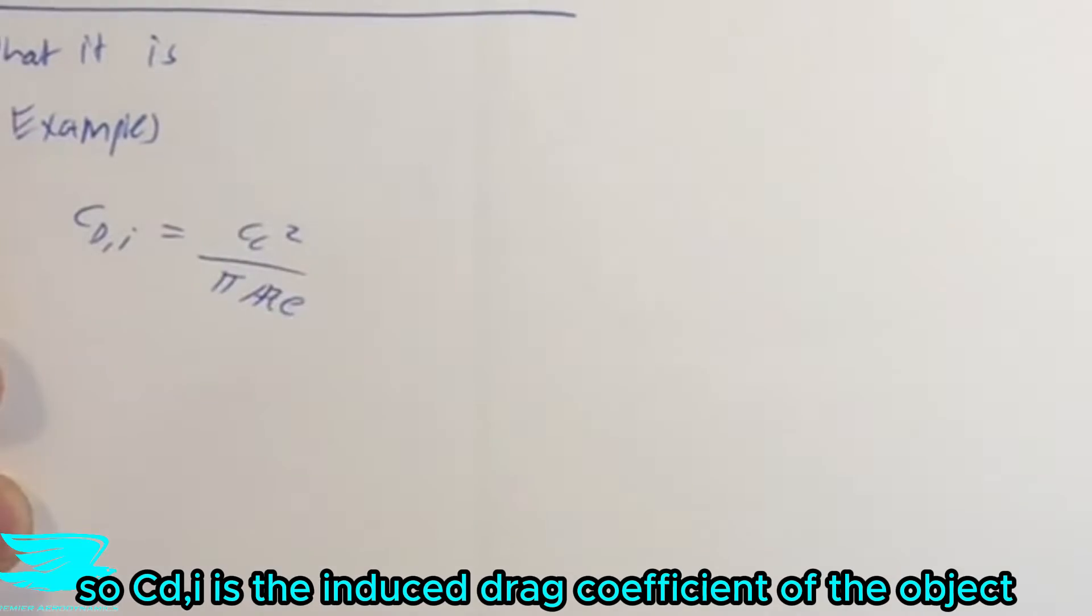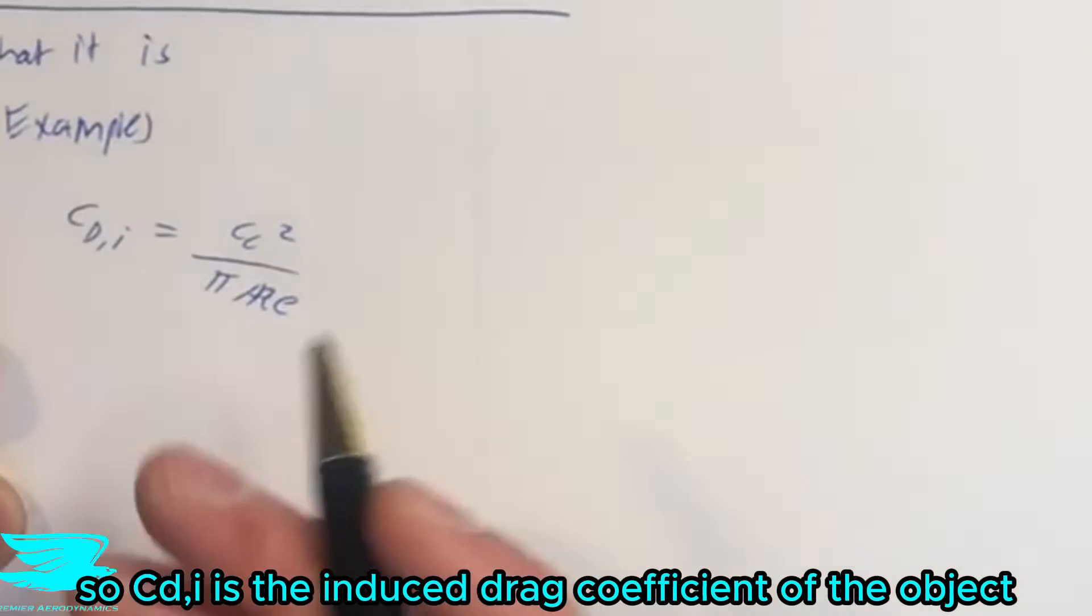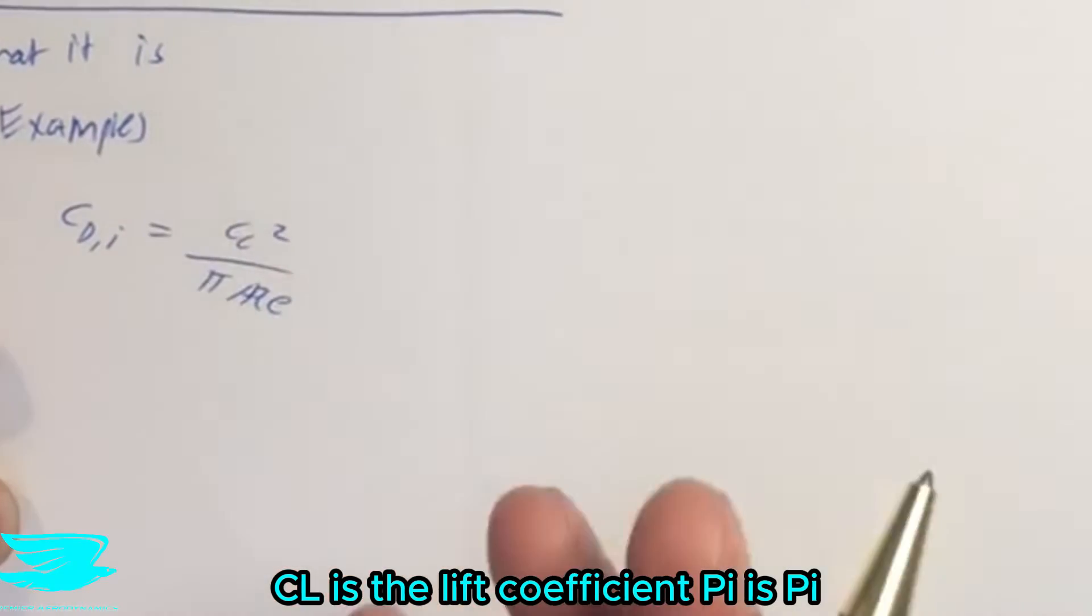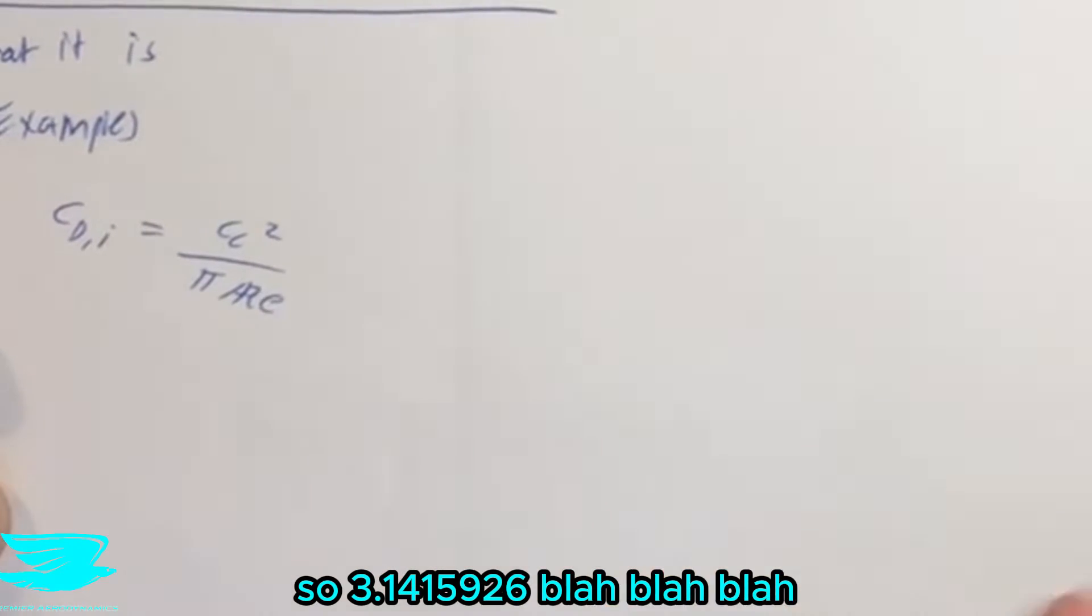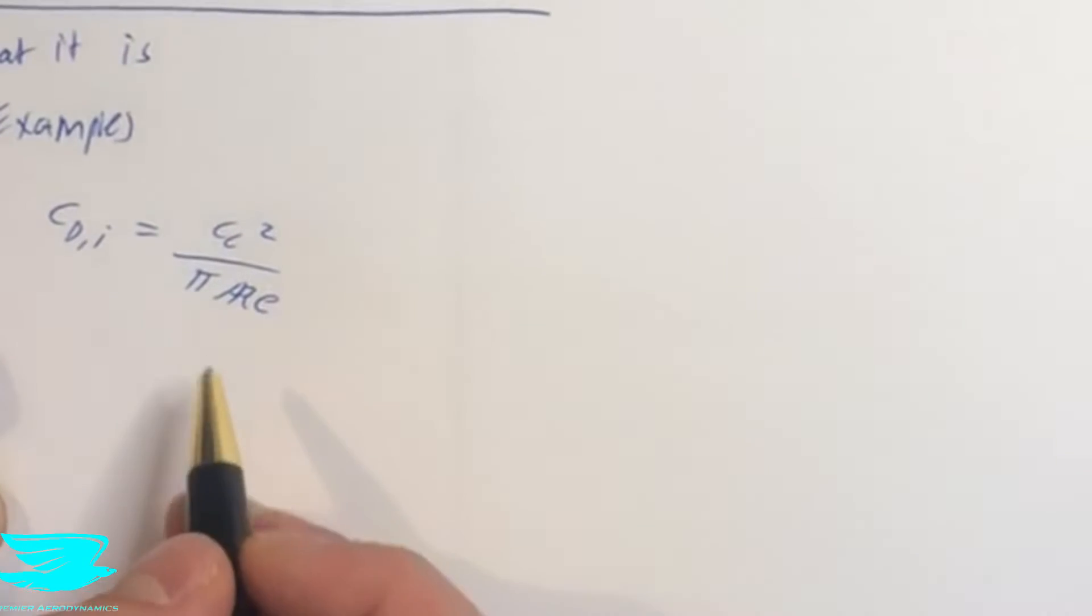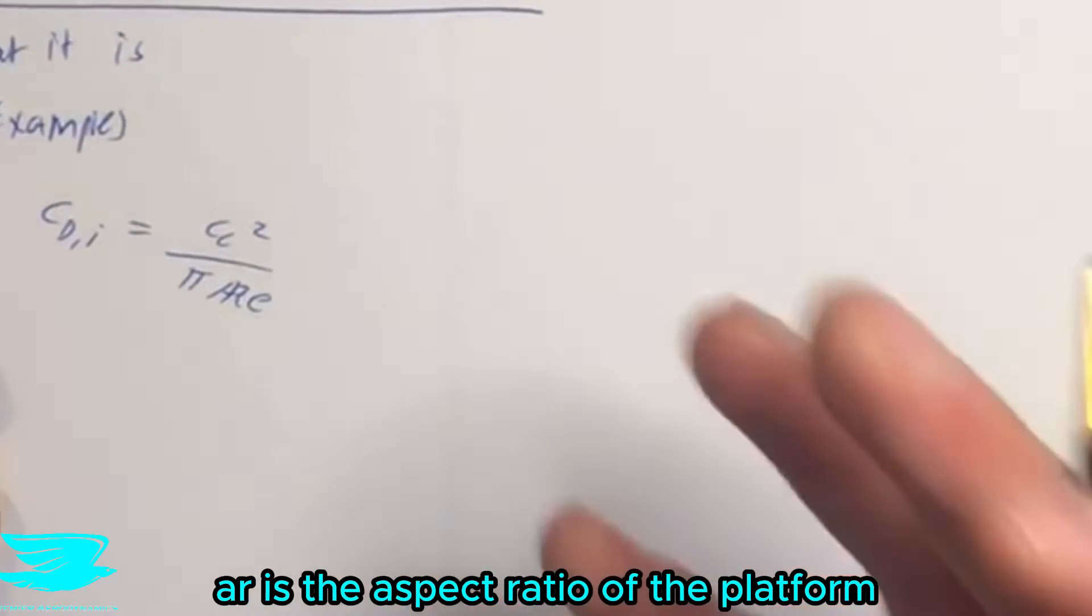So CDI is the induced drag coefficient of the object. CL is the lift coefficient, pi is pi, so 3.1415926. AR is the aspect ratio of the planform, so the wings.